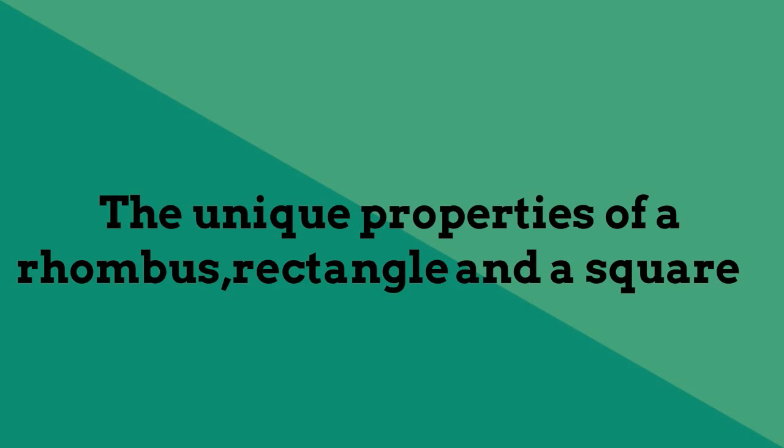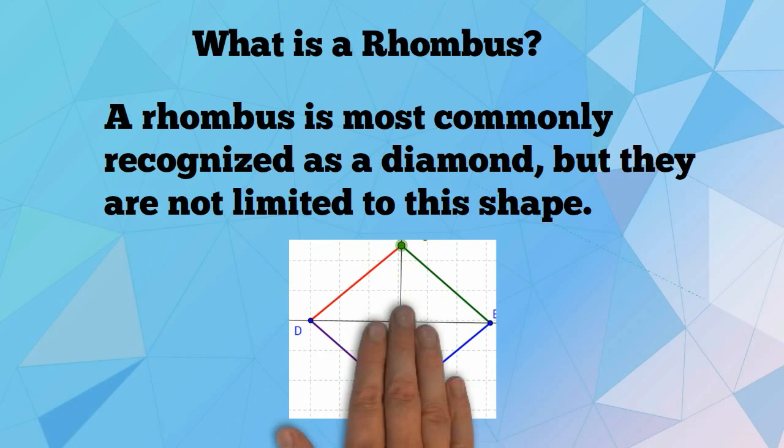Let's go ahead and look at some of the unique properties of a rhombus, rectangle, and square. What is a rhombus? A rhombus is most commonly recognized as a diamond, but they are not limited to this shape.